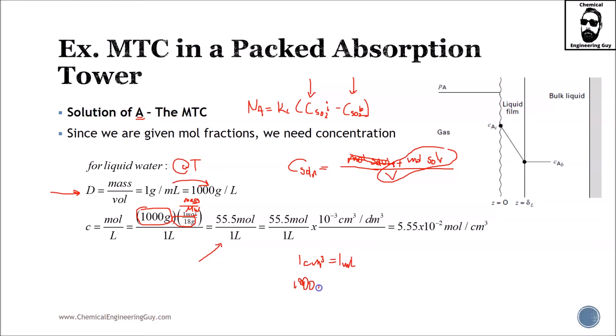Therefore, 1000 cubic centimeters equals 1000 milliliters, which means one liter. And performing this, we get the following concentration, 5.55 times 10 to the minus 2 mole per cubic centimeters.